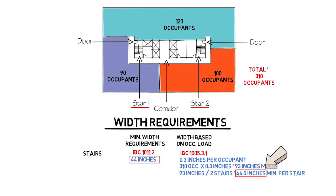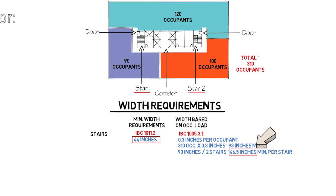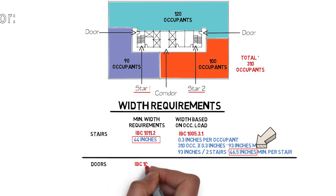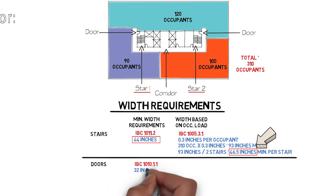Then what about the doors that lead into the stairways? First let's see what the code states as a minimum for doors. This can be found in IBC section 1010.1.1, which notes that a door may not provide less than 32 inches clear width.